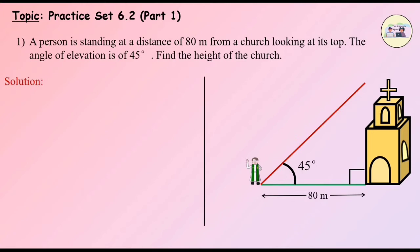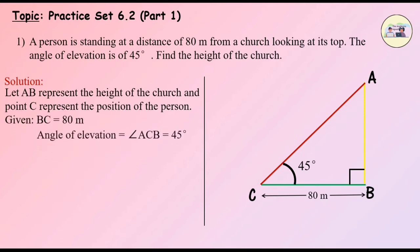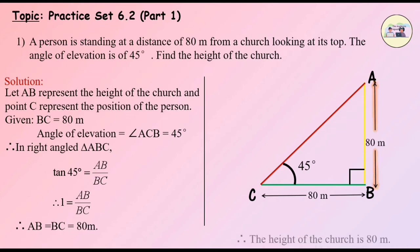Solution: Let AB represent the height of the church and point C represent the position of the person. Given BC is equal to 80 meters. Since the observer is looking at a higher point, we consider the angle of elevation. So the angle of elevation is equal to angle ACB, which is equal to 45 degrees. We know that tan θ equals opposite side upon adjacent side. Therefore, in right angle triangle ABC, tan 45° = AB upon BC, which gives 1 = AB upon BC, since the value of tan 45° is 1. Therefore, AB equals BC, which equals 80 meters. So the height of the church is 80 meters.